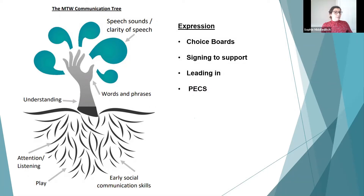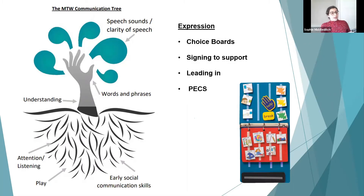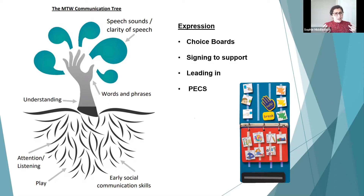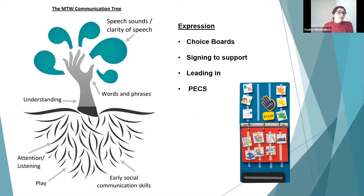PECS — Picture Exchange Communication System — is a way of using symbols to communicate. I have the book here. Importantly, PECS does not stop verbal communication — if anything it encourages verbal communication to develop, and the evidence behind that is strong. It gives children a functional way of communicating when verbal communication hasn't come yet, which reduces frustration. The child learns: if I give you a symbol, I get something in return. We avoid social praise at this stage and just give the item, so they learn they're exchanging and getting something valuable.